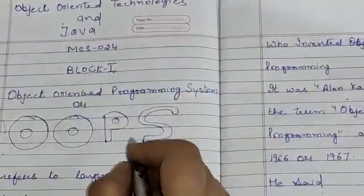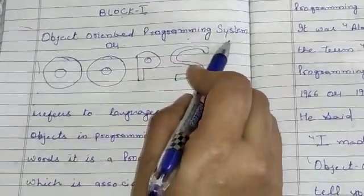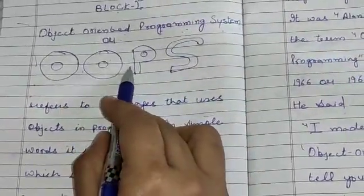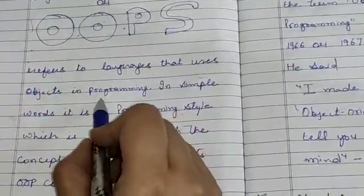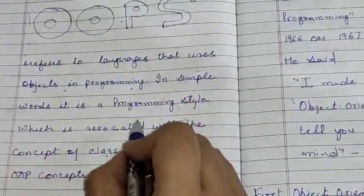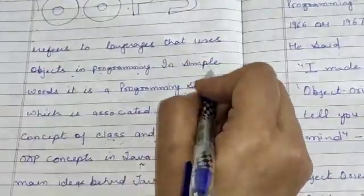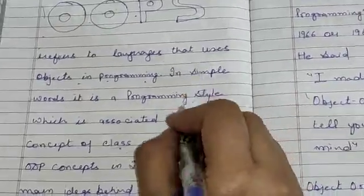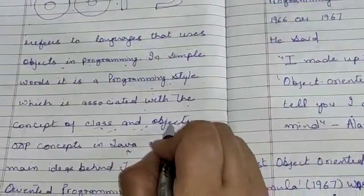In this video, I will tell you what is object oriented programming system. Object oriented programming system is also known as OOPS. OOPS refers to the languages that use objects in programming. In simple words, it is a programming style — or you can say that OOPS is a programming paradigm. Paradigm means a programming style which is associated with the concept of class and objects.